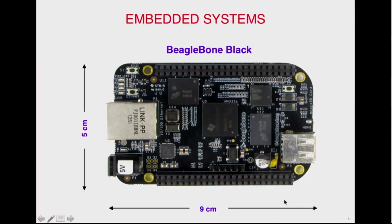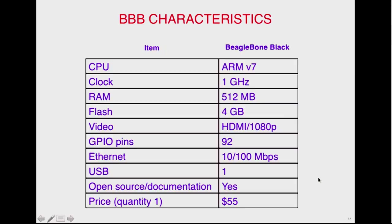We began looking at embedded systems as a target. This is the BeagleBone Black — about the size of a small phone but quite powerful. It's an ARMv7 32-bit architecture, clock runs at a gigahertz, half a gig of RAM, 4 gigabytes of flash memory, HDMI at 1080p, 92 I/O pins, 100 megabit Ethernet, USB port. It's open source — hardware, documentation, everything. In contrast to the Raspberry Pi where everything's a secret, you can find everything you want to know about the Beagle boards. The black is $55, the white is $45, and presumably much cheaper in large quantities.